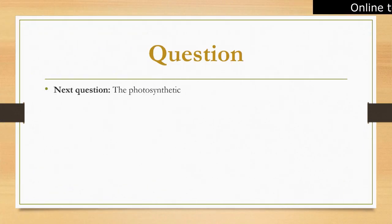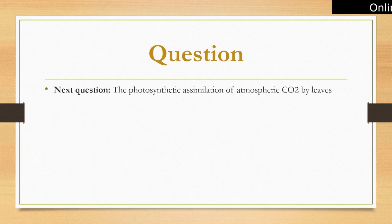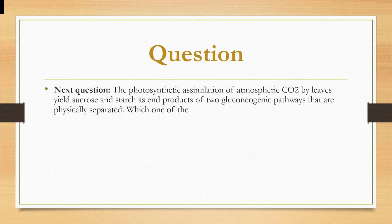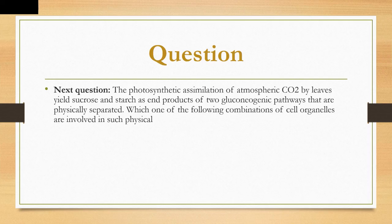Although these tissues play important roles in seed germination, they are not the site of alpha-amylase gene induction in response to GA. Which one of the following combinations of cell organelles is involved in the physical separation of sucrose and starch synthesis during photosynthetic assimilation of atmospheric CO₂ by leaves, yielding sucrose and starch as end products of two gluconeogenic pathways?